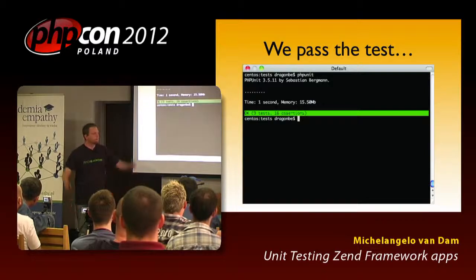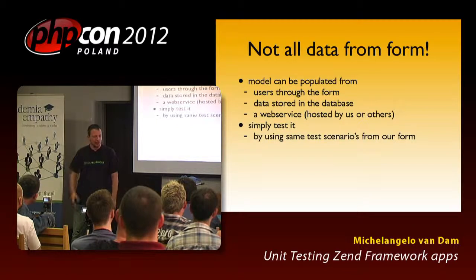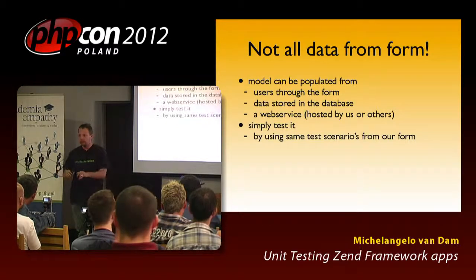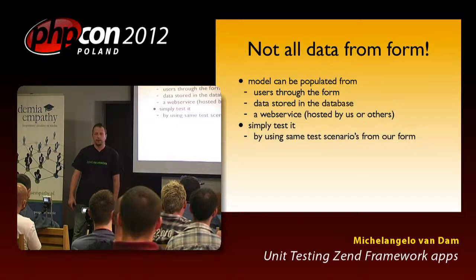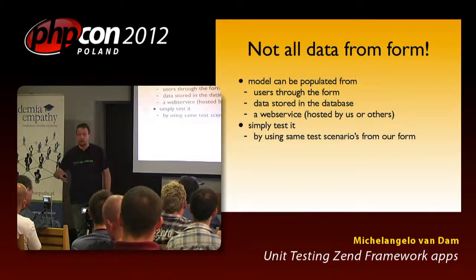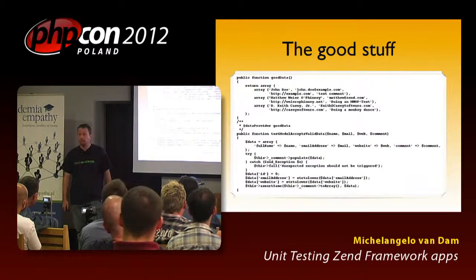We create the model with setters, getters, populate function, and toArray function. We passed the test — but wait. Not all the data comes from a form. Models can be populated by users using a browser and entering form details, but it can also be coming from a database. If your database is hacked, you get corrupt data into your presentation layer. Or maybe it's a web service hosted somewhere else, or maybe within your own company. So we need to test it.